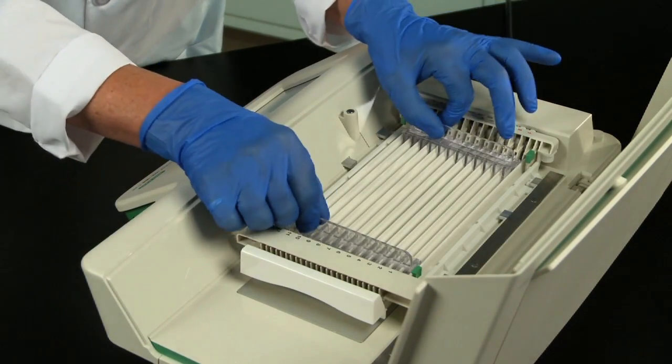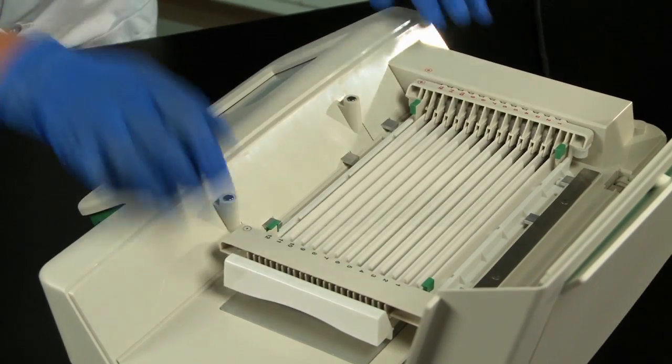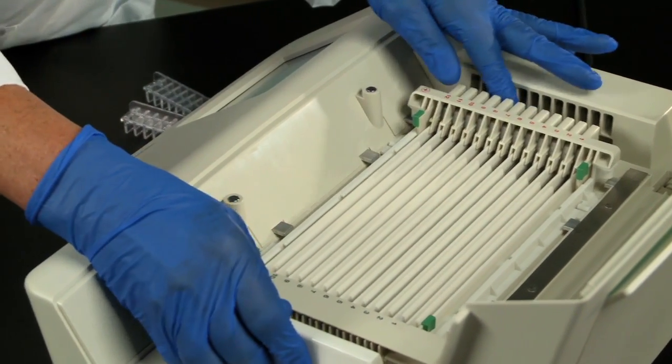After the run is finished, the tray can be removed by sliding it away from the electrodes and lifting it out of the instrument.